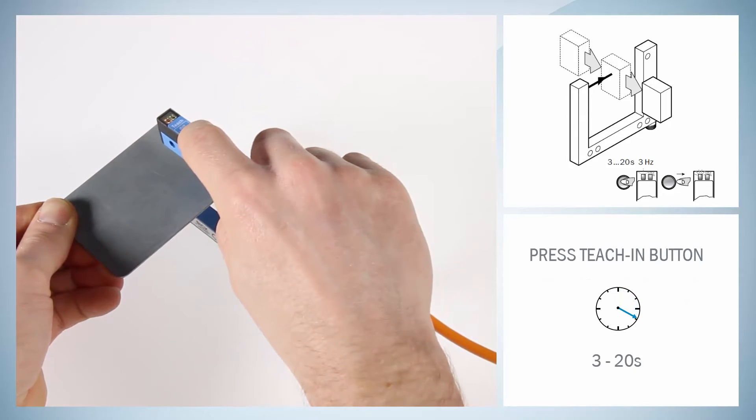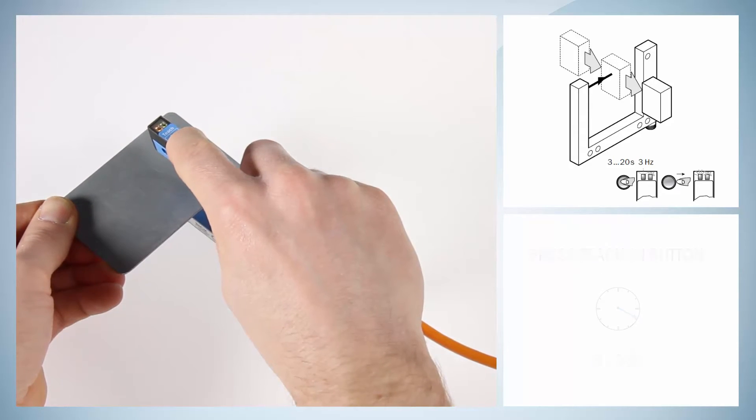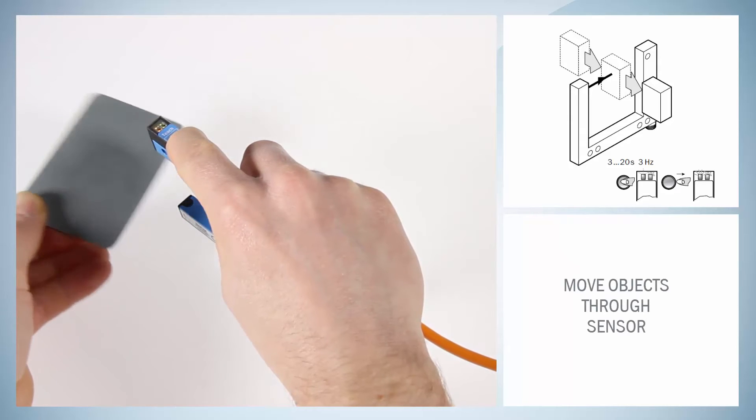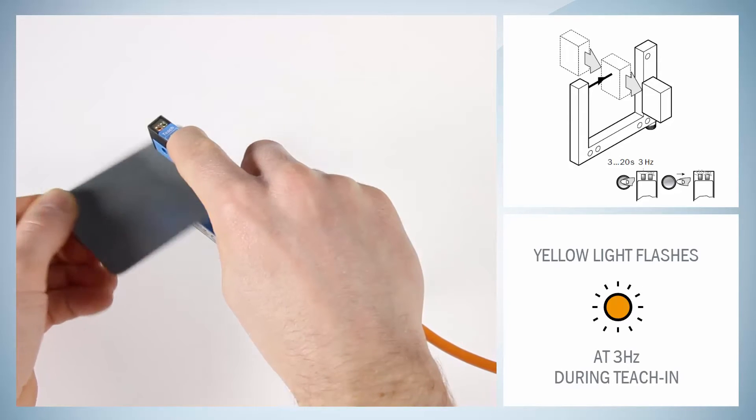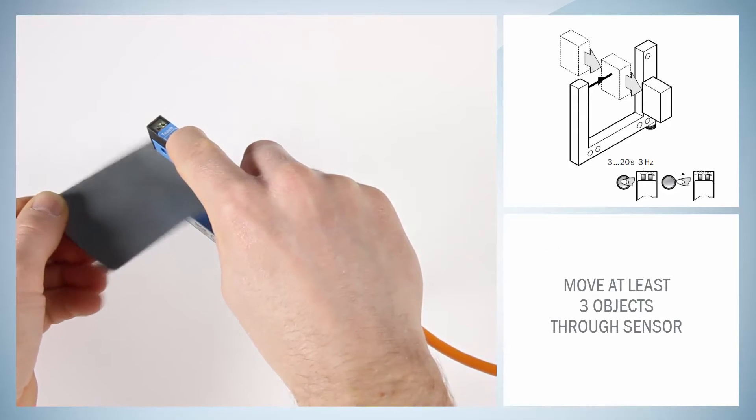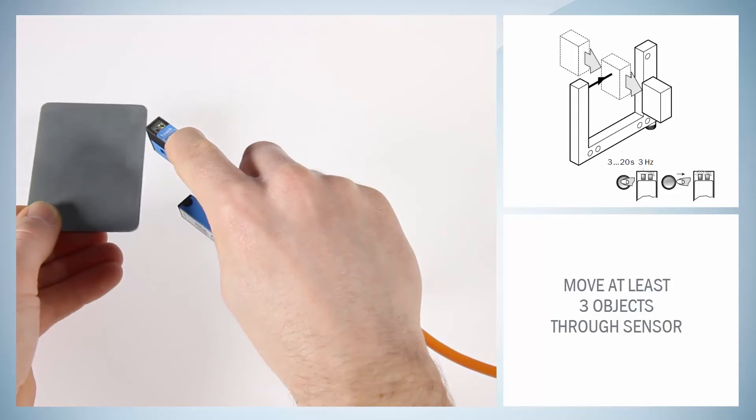Press the Teach-In button for 3 to 20 seconds. With the push button pressed down, move several objects through the sensor. The yellow LED flashes at 3 hertz during the Teach-In procedure. It is recommended to move at least 3 objects through the sensor.